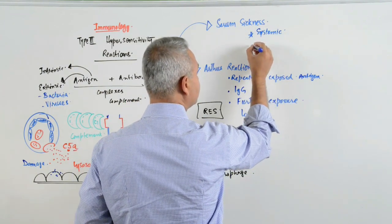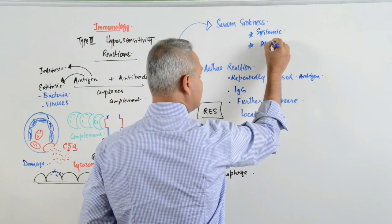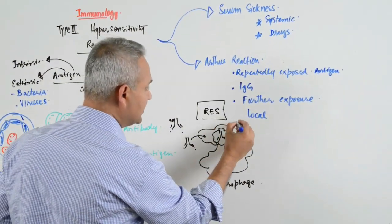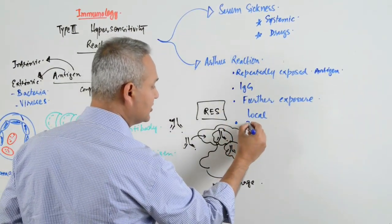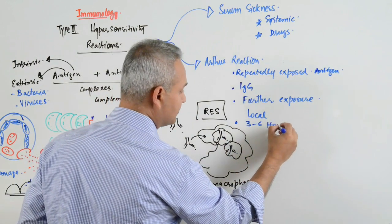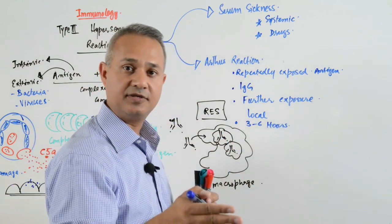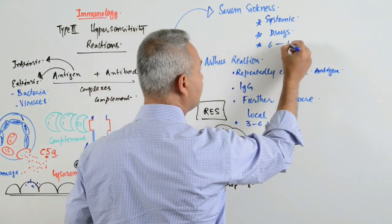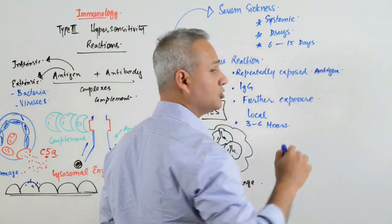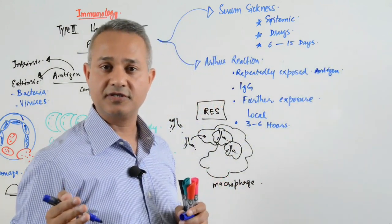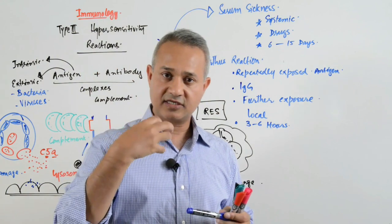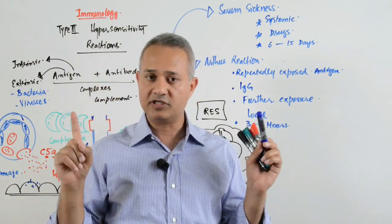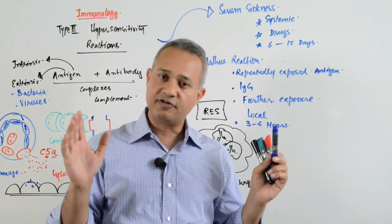Nowadays, it is seen after the drugs. One thing that I did not mention here: Arthas reaction occurs within 3 to 6 hours of injecting an antigen. This occurs within 6 to 15 days after exposure to the antigen. Why? Because when the antigen is coming into the body, it allows the antibodies to be developed. Antibodies development takes 10 to 15 days, 6 to 15 days.